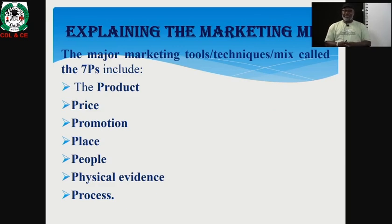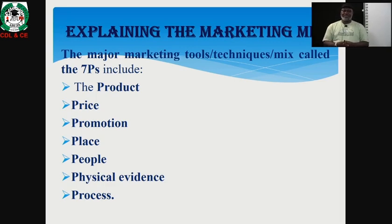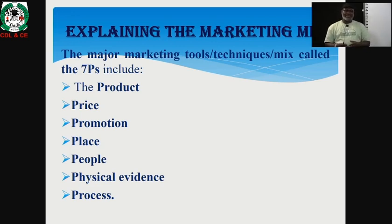There are seven P's or seven tools or seven elements in the marketing mix, although they continue to vary and increase. But we will focus on these seven tools: product, price, promotion, place, people, physical evidence and process. The essence of the marketing mix is to get the right blend, the right combination, the right mix of these seven elements to attain competitive advantage and to create satisfaction. Let us look at each of these tools one after the other.